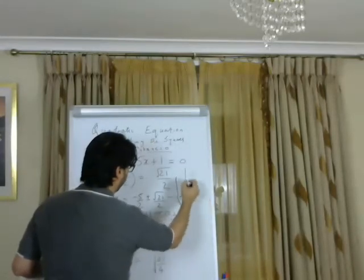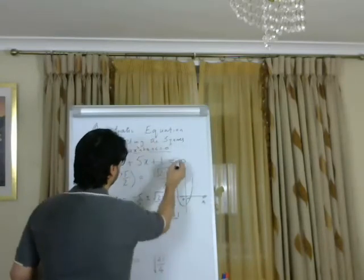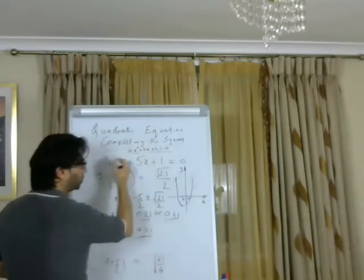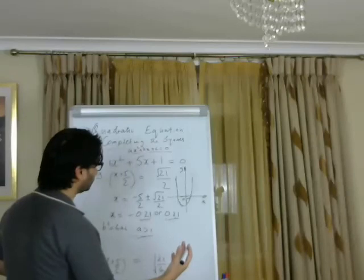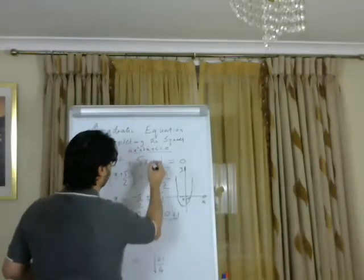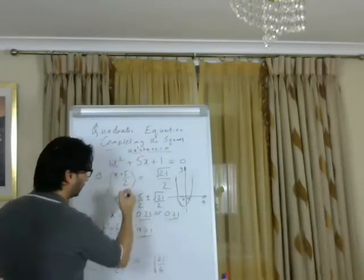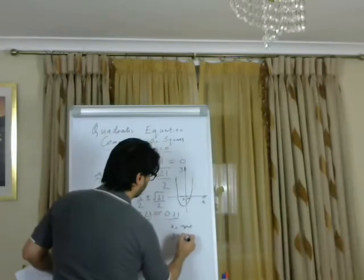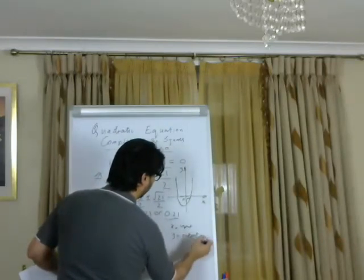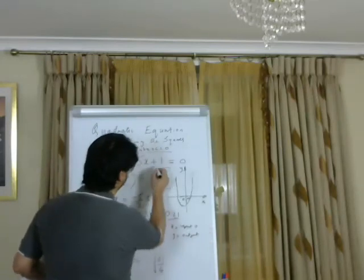This is a parabola shape — you've got y on one axis and x on the other. This quadratic expression is also a function, so you can substitute values of x as inputs and get values of y as outputs.